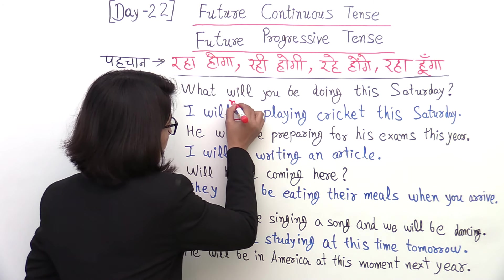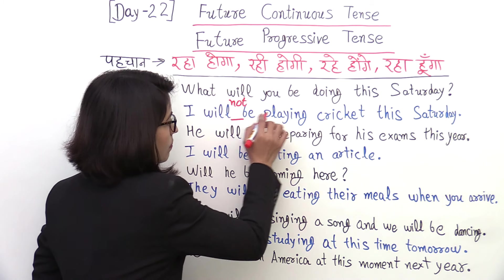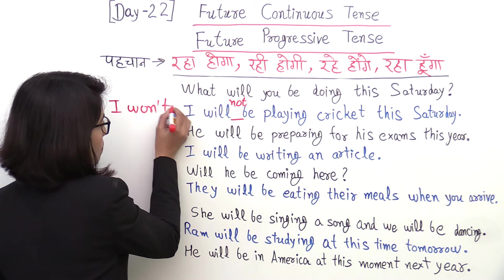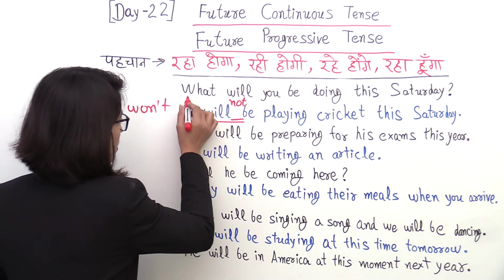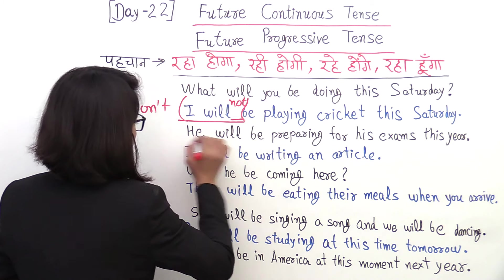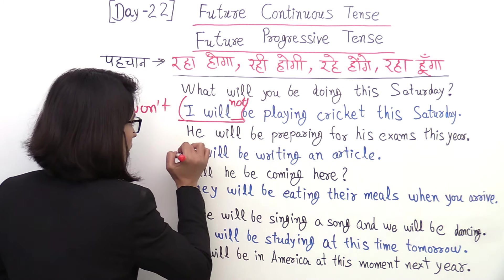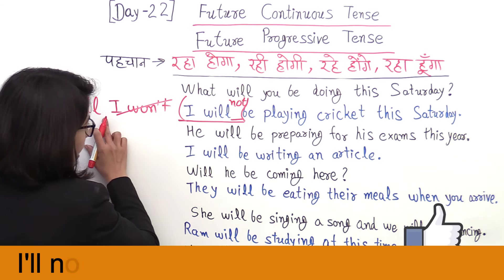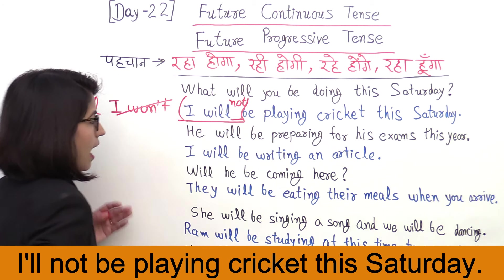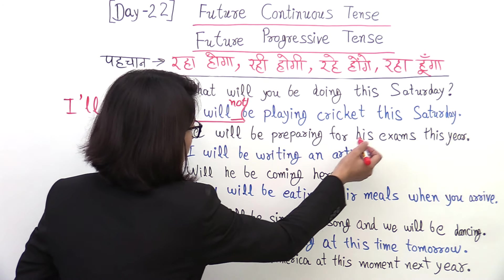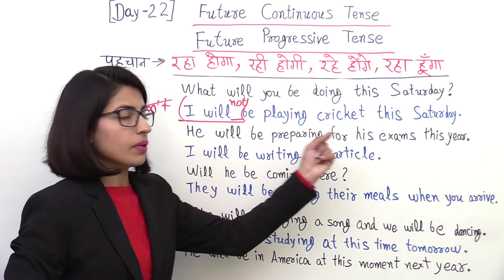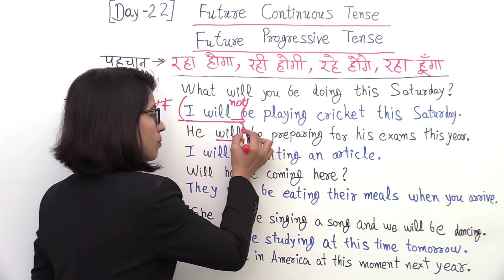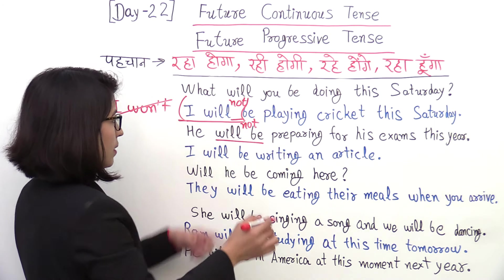Now let's make it negative: We will not be playing cricket this Saturday. In contractions: I won't be playing cricket this Saturday. Then, for another example — this year he will prepare for his family, so: We will be preparing. When it is negative: We will not be coming, or in contraction form.